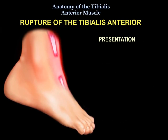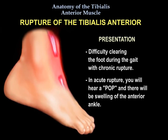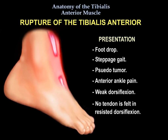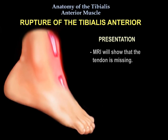With chronic rupture, the presentation is usually difficulty clearing the foot during gait. In acute rupture, the patient will hear a pop and there will be swelling of the anterior ankle. The presentation typically includes foot drop, antalgic gait, a soft tissue mass, anterior ankle pain, weak dorsiflexion, and no tendon is felt on resisted dorsiflexion. MRI will show that the tendon is missing.